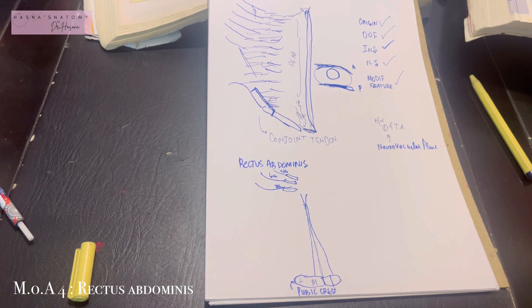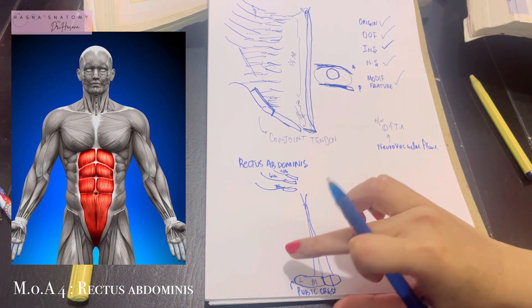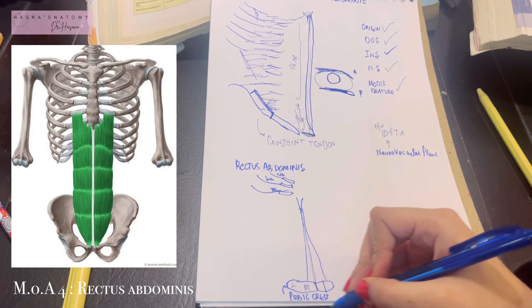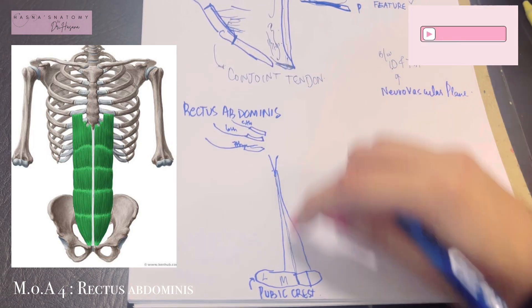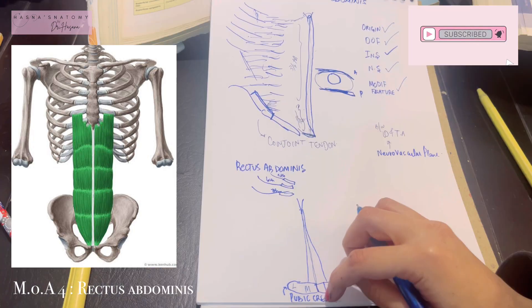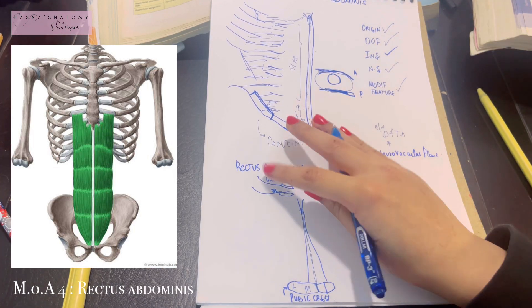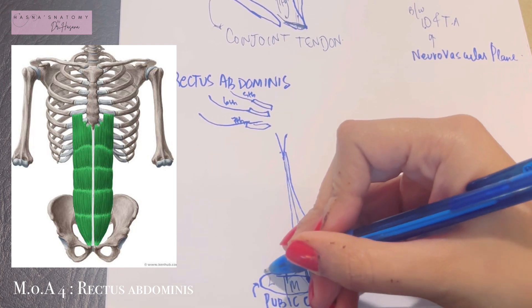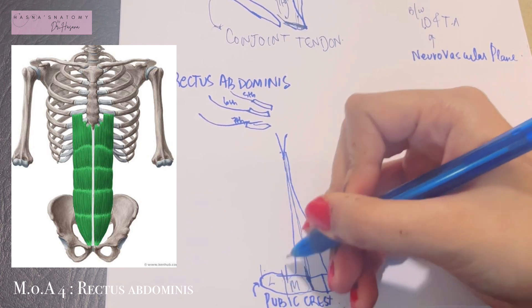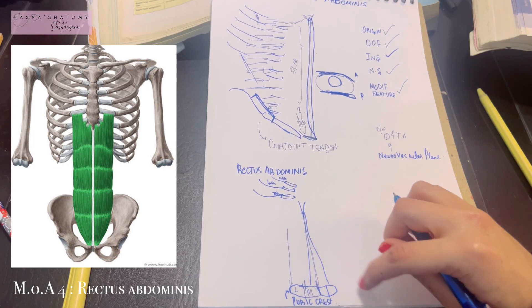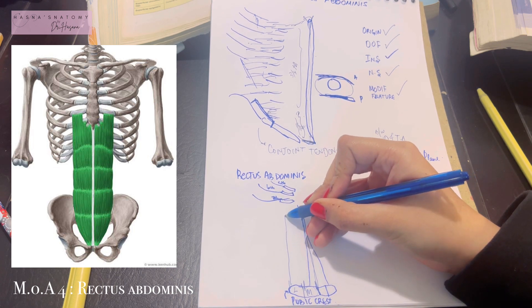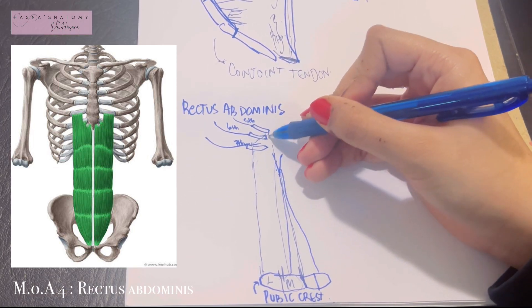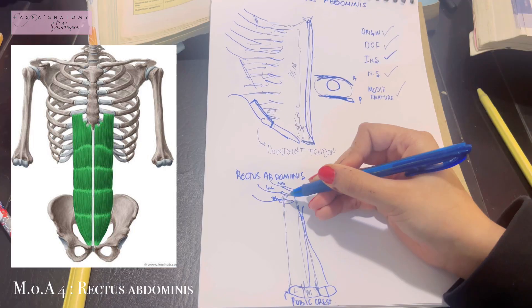Now let's talk about the rectus abdominis, the major muscle of the abs — the six-pack. It is a vertical muscle of the anterior abdominal wall. It has two heads: a medial head arising from the medial part of the pubic crest and a lateral head from the lateral part of the pubic crest. The muscle runs upwards and attaches to the xiphoid process and the 5th, 6th, and 7th costal cartilages.